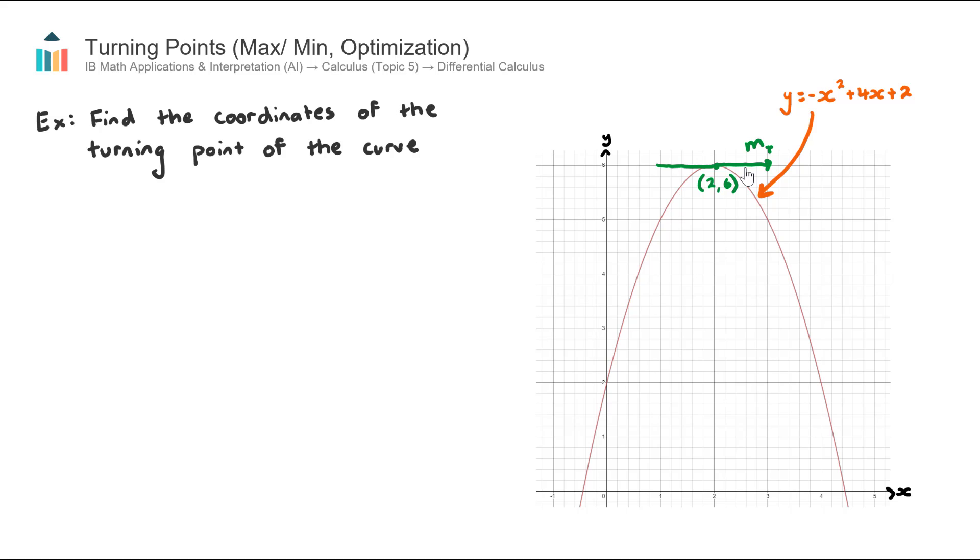The gradient of this tangent is equal to zero, which means that the slope of this curve at the turning point is equal to zero. Recall that the derivative, let's call it y', gives us the slope of the curve. We actually know that that is equal to zero. This is the really important understanding here. So at turning points we can let the derivative equal zero.